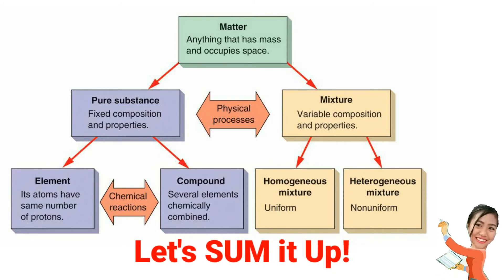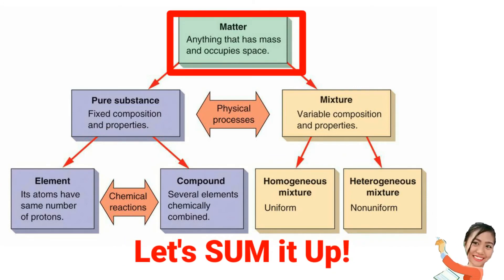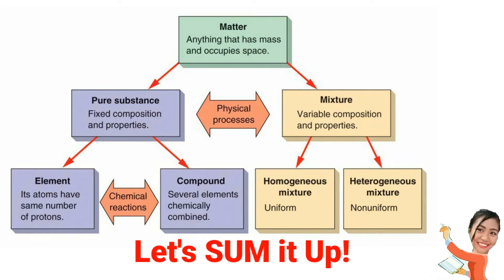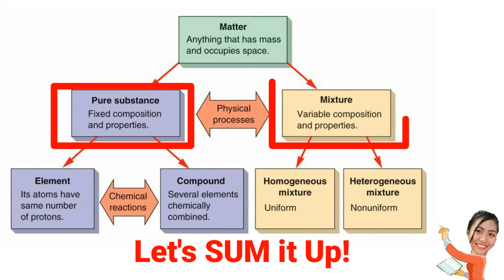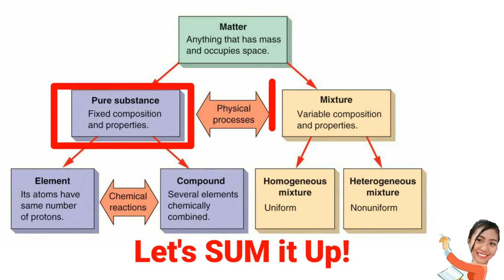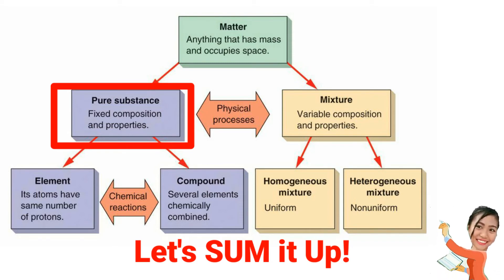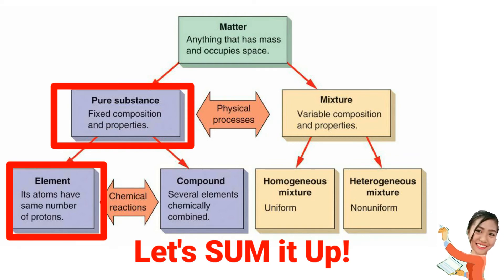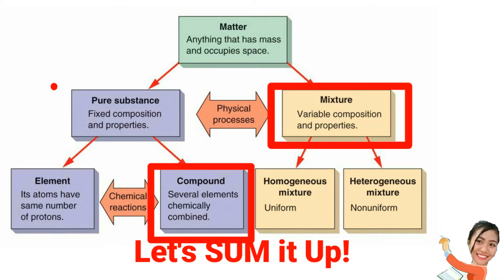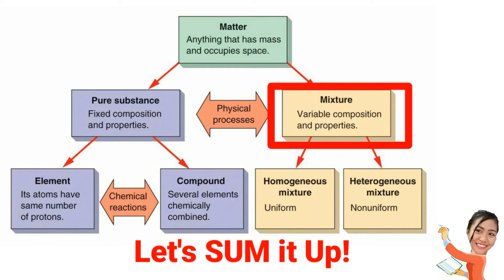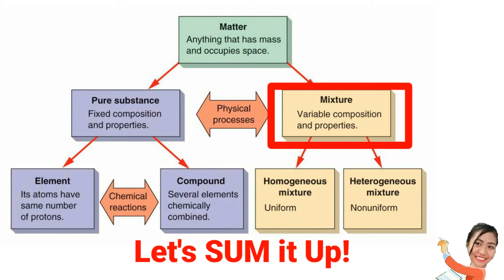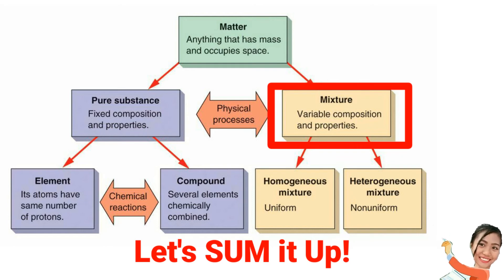To sum it up: matter is anything that has mass and occupies space, classified into pure substance and mixture. A pure substance has fixed composition and properties, with two types: element and compound. A mixture has variable composition and properties, classified as homogeneous — which is uniform — and heterogeneous, which is non-uniform.